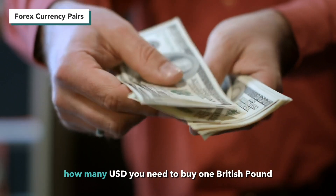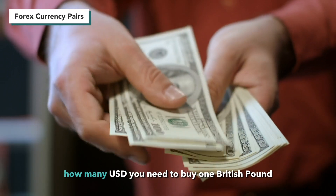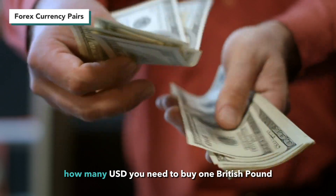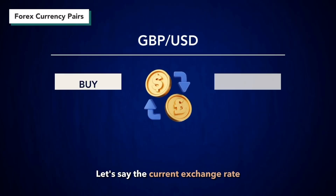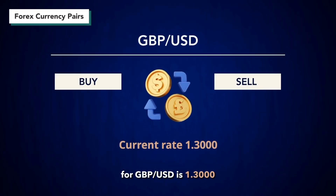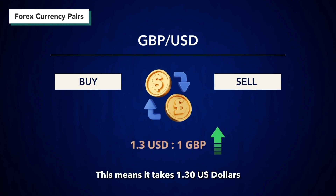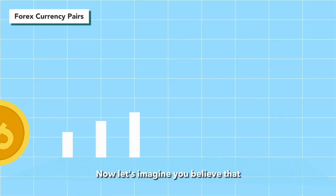This means the exchange rate tells you how many U.S. dollars you need to buy one British pound. Let's say the current exchange rate for pound sterling to U.S. dollar is 1.3000. This means it takes 1.30 U.S. dollars to buy one British pound.